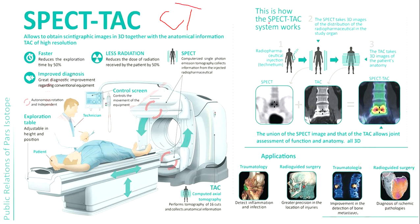Here is how a SPECT-CT system works. First, we inject a radioisotope contrast into the patient. Second, SPECT takes 3D images of the distribution of the radiopharmaceuticals in the organ being studied. Third, the CT component takes 3D images of the patient's anatomy. The result is a high-resolution image processed by computer, combining the SPECT functional image with the CT anatomical image for joint assessment of function and anatomy in a 3D scan.